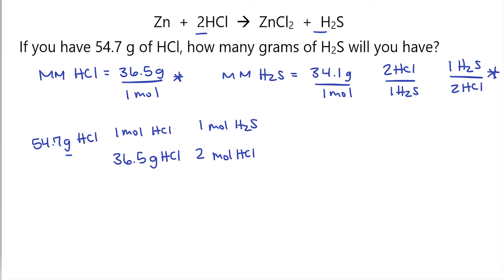Now, for my last step, I need to convert the moles of H2S to grams of H2S. Well, here I'm going to use the molar mass. So I'll use this fraction. So I'll have my 34.1 grams of H2S over one mole of H2S.